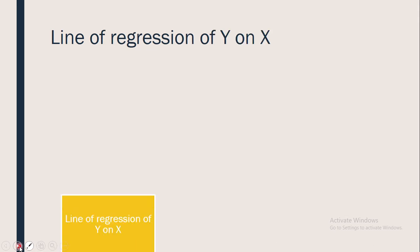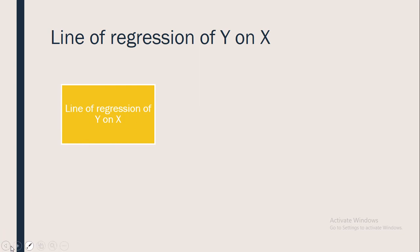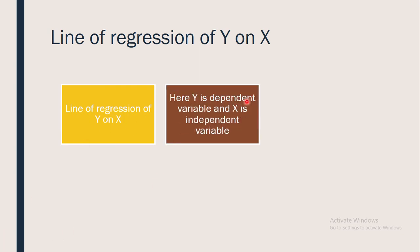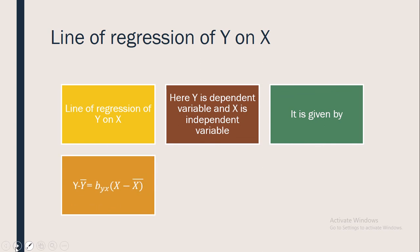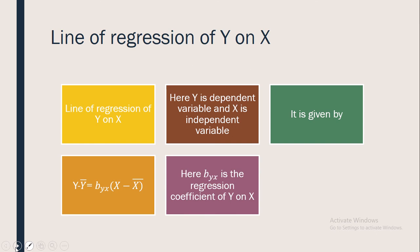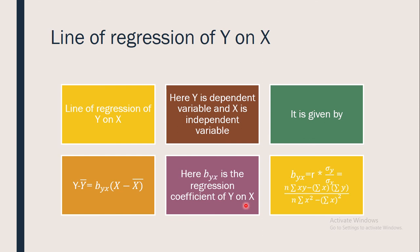The line of regression of y on x — where y is the dependent variable and x is the independent variable — is given by: y − ȳ = b_yx(x − x̄). Here b_yx is the regression coefficient of y on x, and the formula is b_yx = r × (σy / σx). I hope you all understood the basics of regression analysis and the ideology behind it. This was just an introductory part. Thank you.